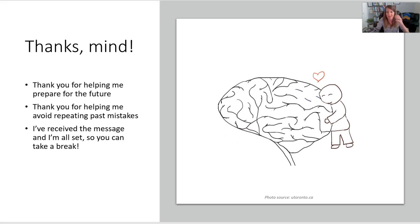Or if I'm constantly thinking about what's going to happen in the future: 'Hey brain, thank you for helping me prepare. I've got a plan, I've got it written down, I've figured out what I'm going to do. And now I can go back to being focused in the present moment, back to mindfulness.' Just tell your brain: 'I've received the message. Thank you. I know you're trying to help me survive. I am surviving and thriving. You can go on standby and take a break — let's focus on the here and now.'